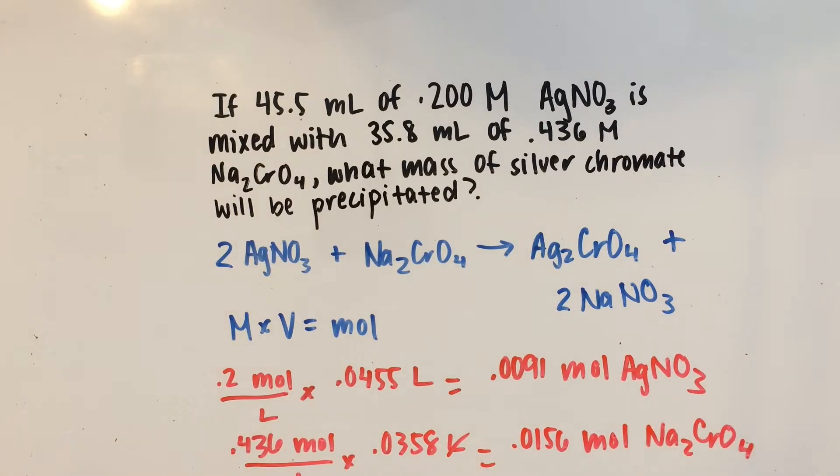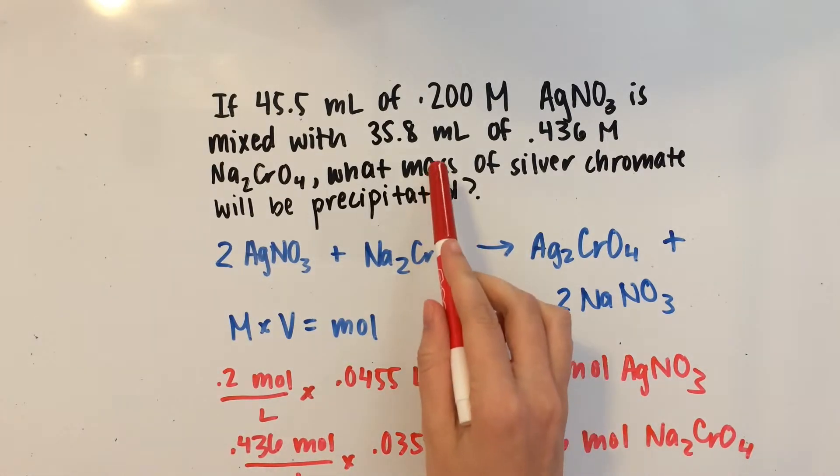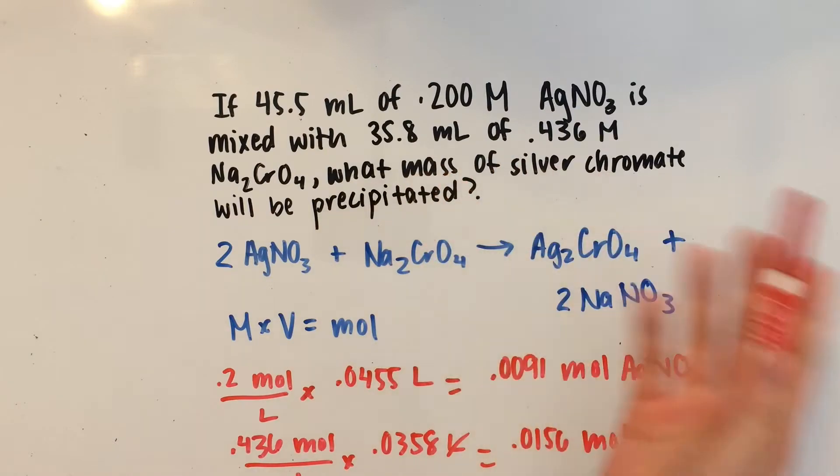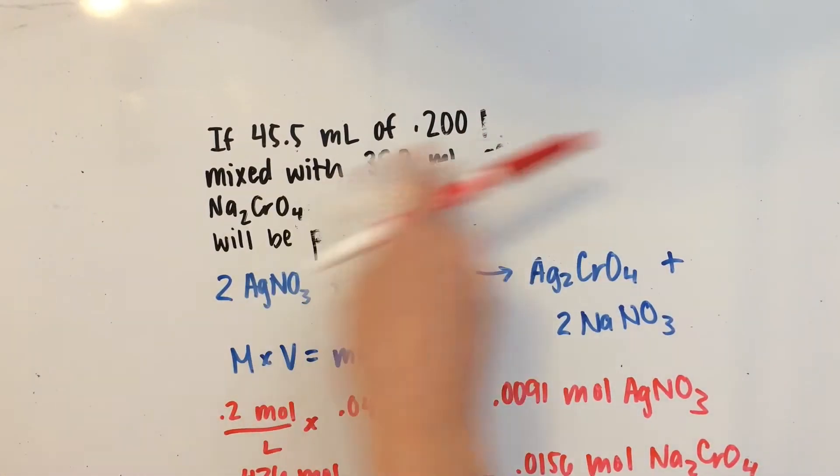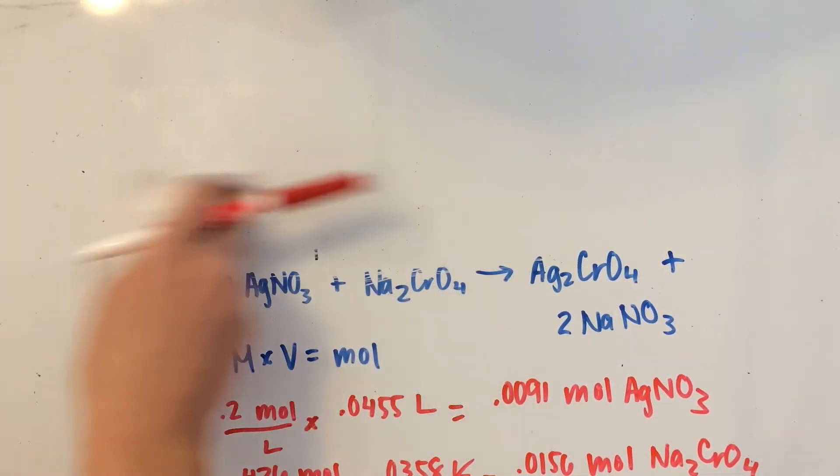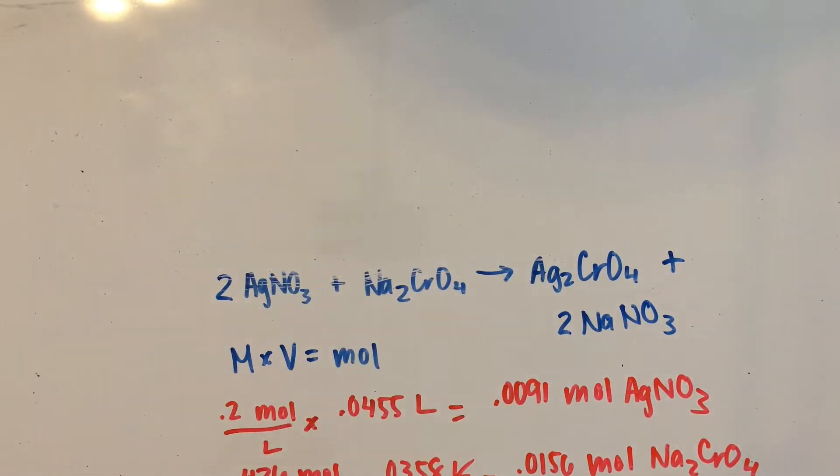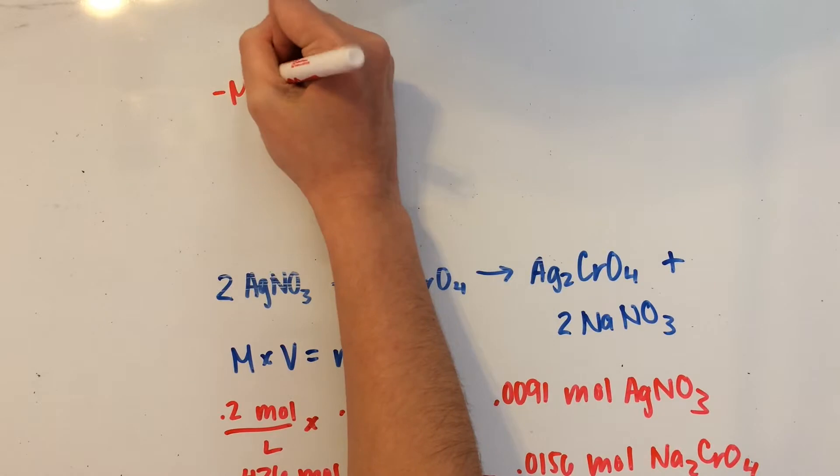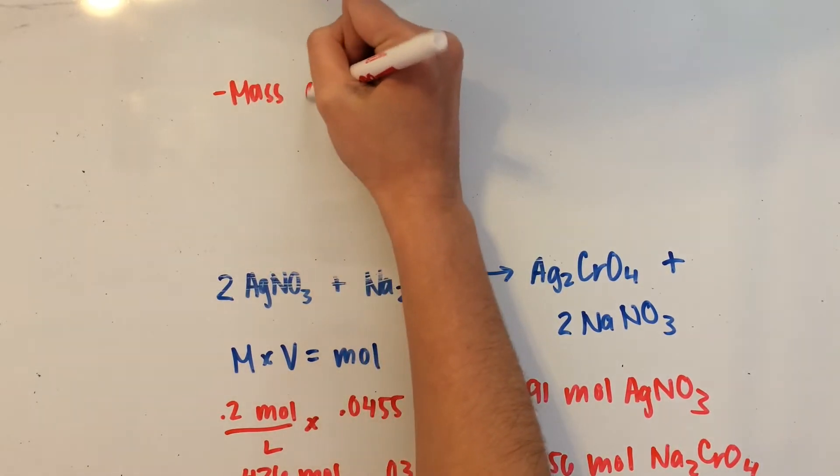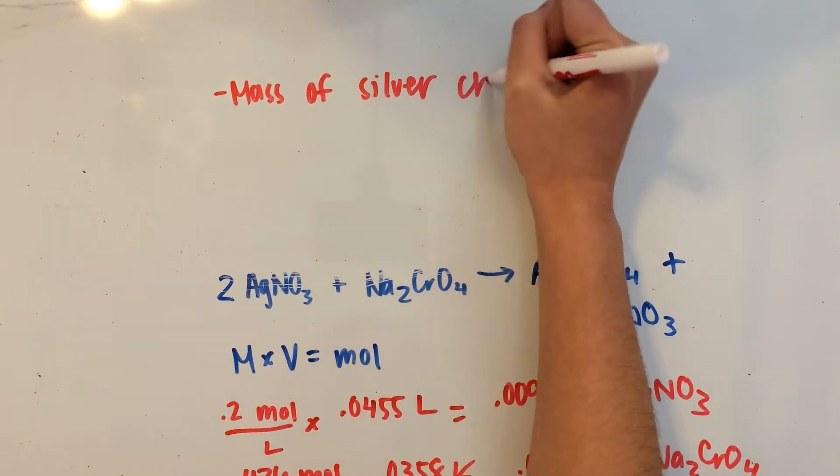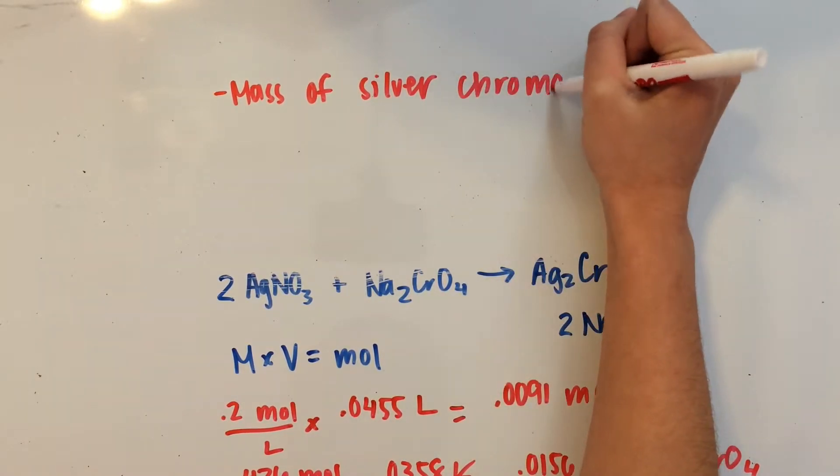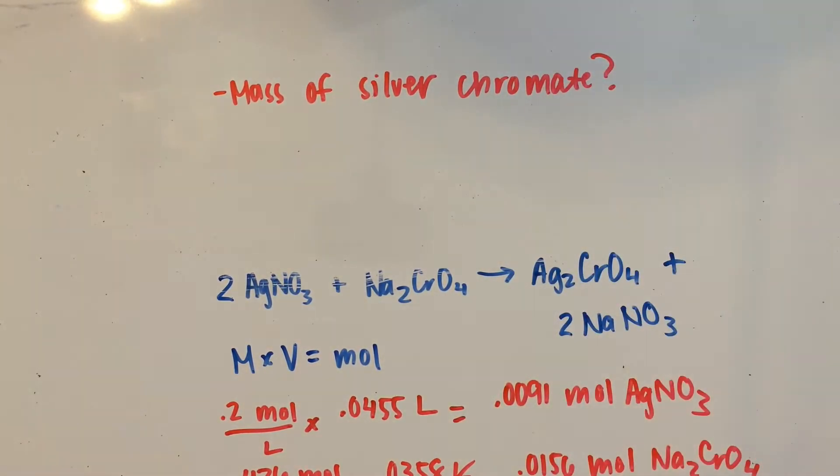Okay. Now, we have to keep in mind that what we're looking for is the mass of silver chromate. So I'll just erase the questions so we have some more room to work with here. And we're still looking for the mass of silver chromate.